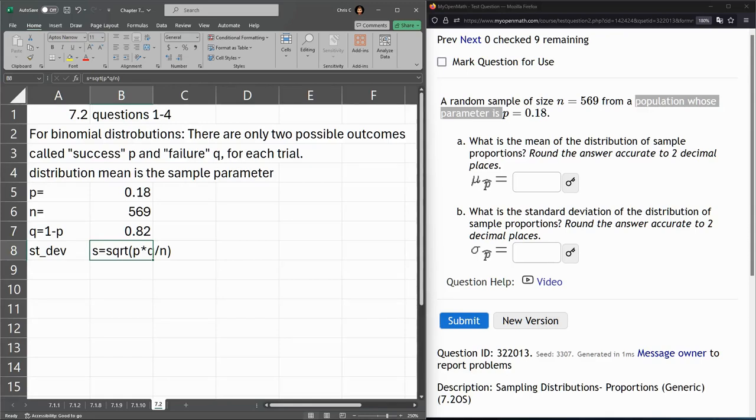So that will be a computation. I'm going to go ahead and compute that. It's square root of p times q divided by n. So I could type them in, or I could just click times q divided by,